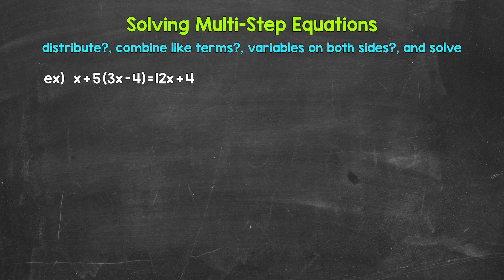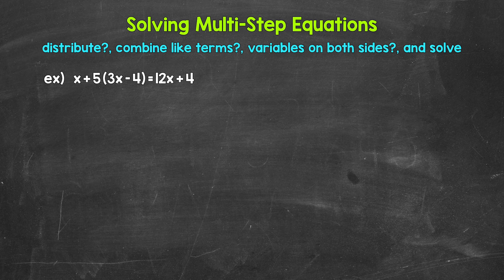We will start by using the distributive property, then we will combine like terms, and then since we have variables on both sides, we will get the variable to one side, and then we will look to isolate the variable. Those steps are at the top of the screen, and I have question marks by them because not all equations are the same. We can ask ourselves: Can I distribute anything? Can I combine like terms? Are there variables on both sides? And lastly, we need to solve — which doesn't have a question mark because no matter what type of equation we have, we will look to isolate the variable.